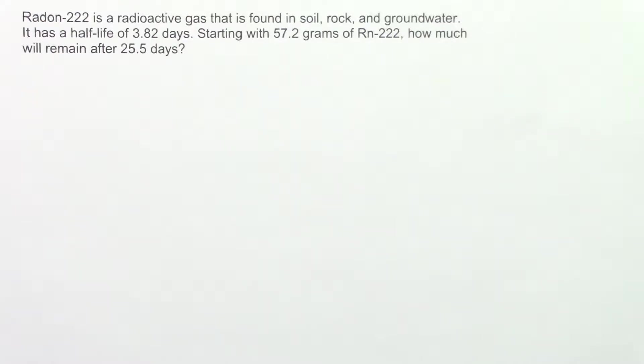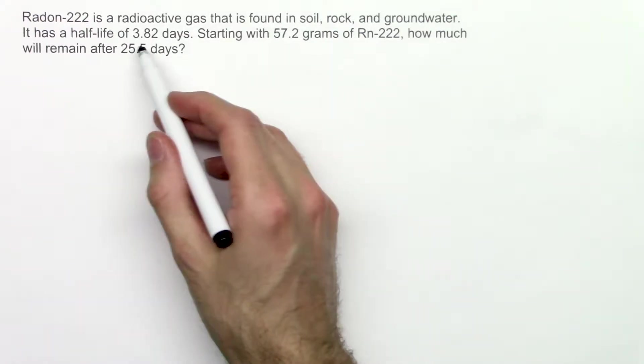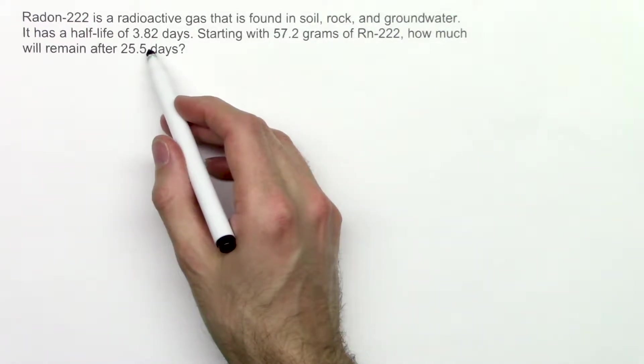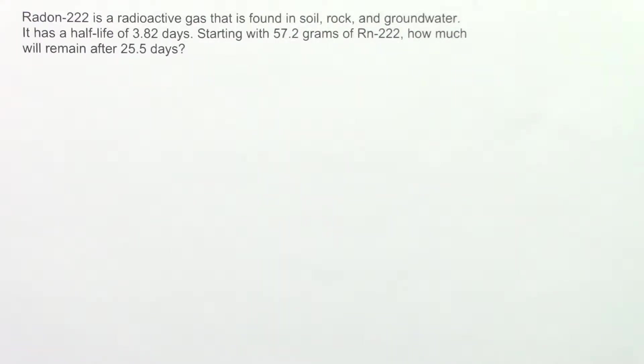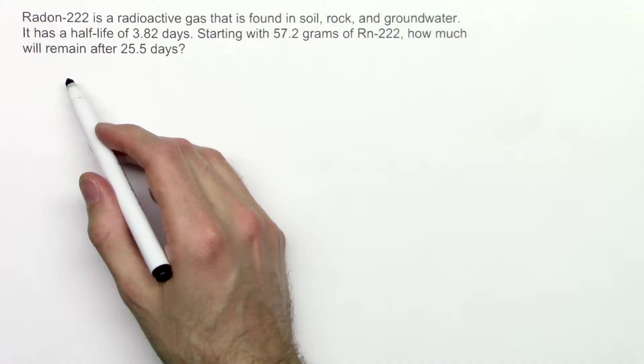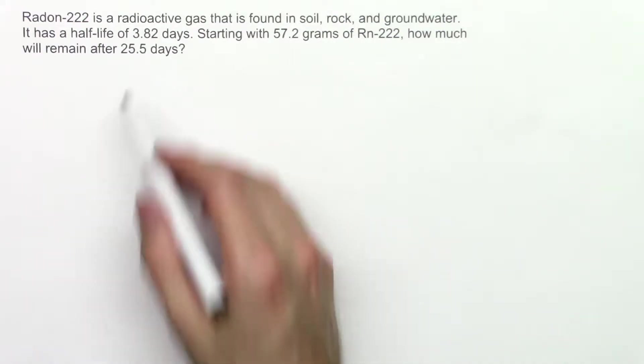Radon-222 is a radioactive gas that is found in soil, rock, and groundwater. It has a half-life of 3.82 days. Starting with 57.2 grams of radon-222, how much will remain after 25.5 days?